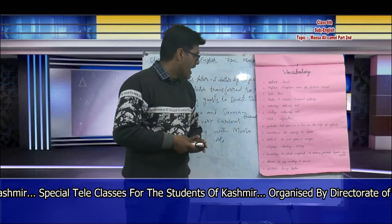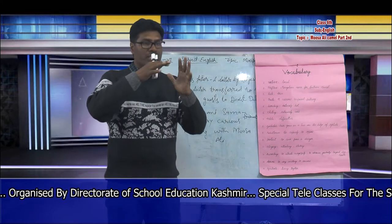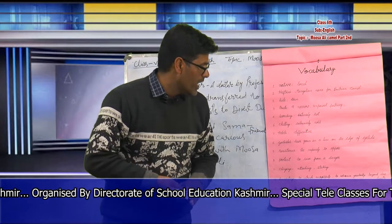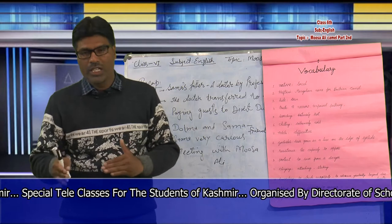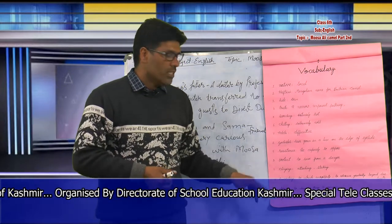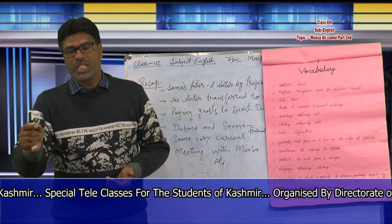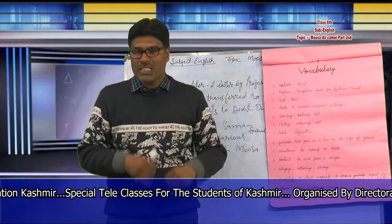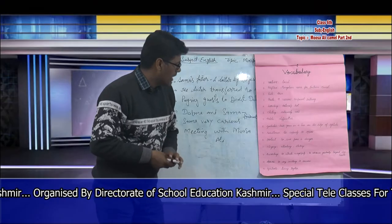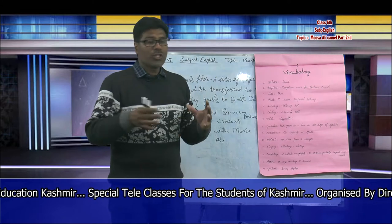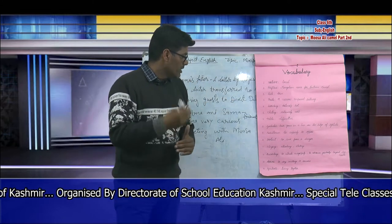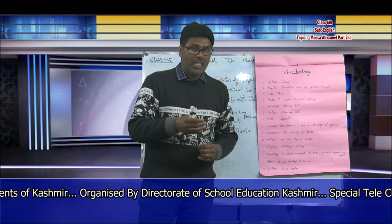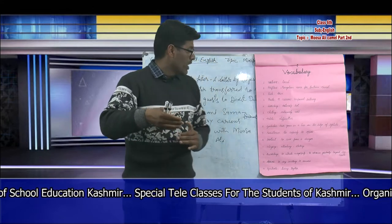Word number 10 is 'protect,' which means to be safe or secure — to save something from danger. Another word used in the lesson is 'clinging.' The quotation was: the camel calf was clinging to Musa Ali. Clinging means attaching or sticking. Word number 12 is 'encroaching.' Encroachment means to intrude unrightfully or to advance gradually beyond your due limits. We also have 'deprives,' which means to deny something to someone. And the last word is 'symbiotic.' Symbiotic means living together — there is a symbiotic relationship between man and animal, as seen between Musa Ali and the camel calf.